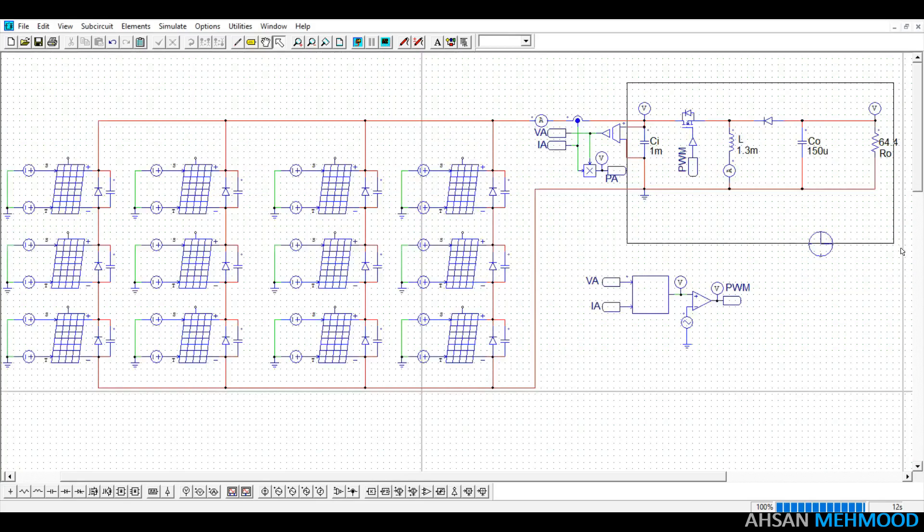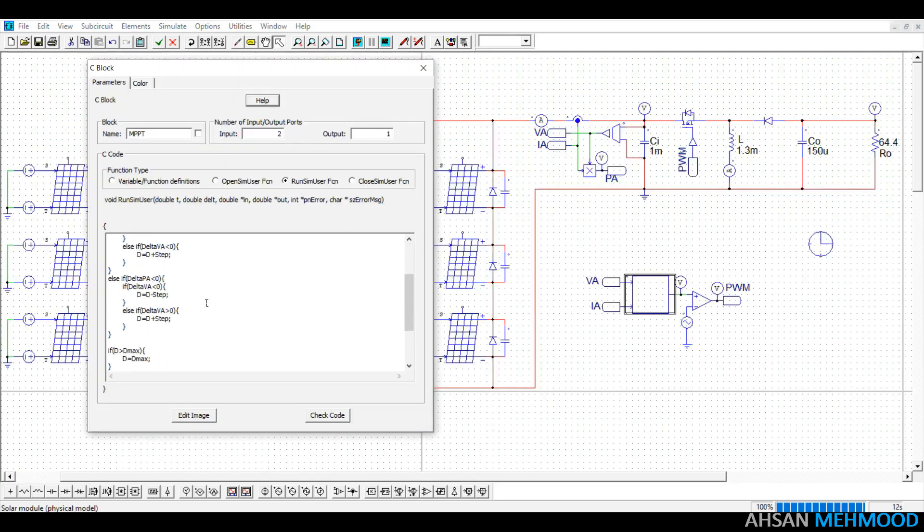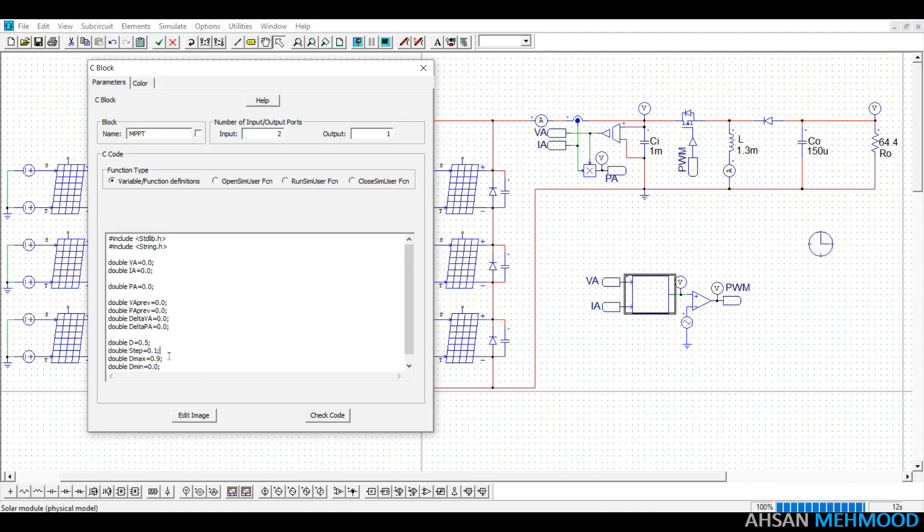The design values are entered into the appropriate buck boost converter component and shown next to each element. The duty ratio and PWM signals for the converter are generated by the C block and comparator respectively. The MPPT P&O method has been used inside the C block to track the highest power point. The step size of the P&O algorithm has been set to 0.1.